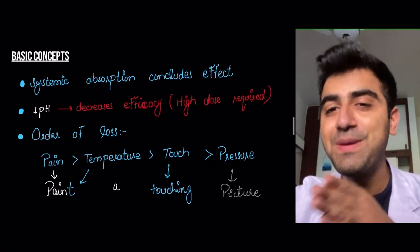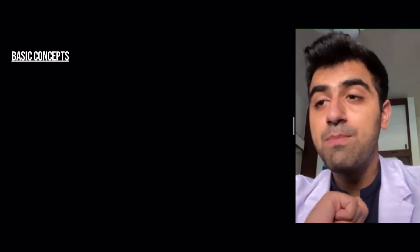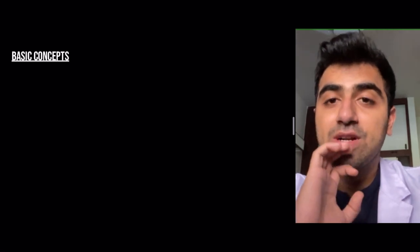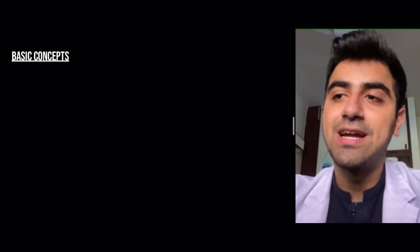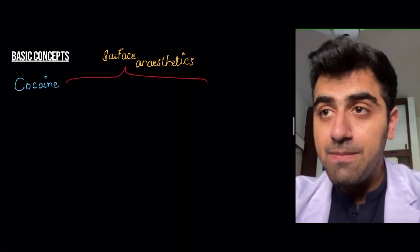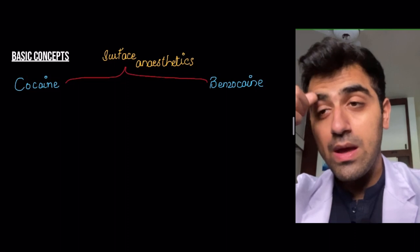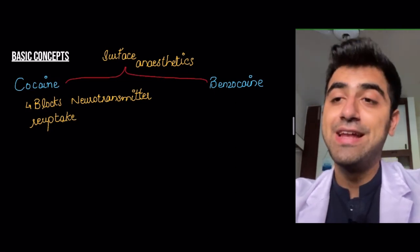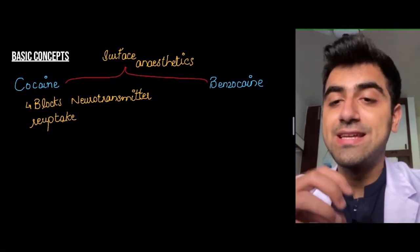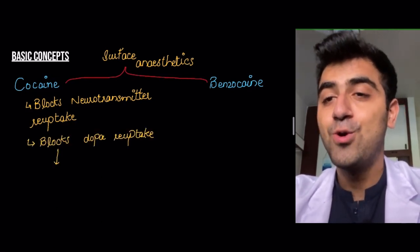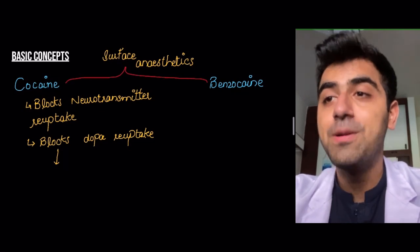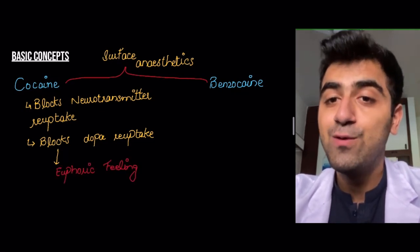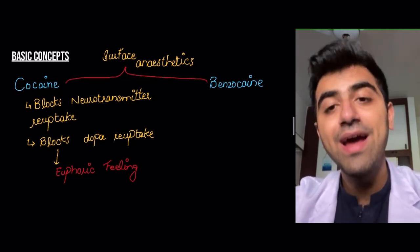Now let's talk about esters. I'll only cover the most high-yield points for each drug. Cocaine blocks neurotransmitter reuptake — it's a stimulant that increases synaptic levels of neurotransmitters. It blocks dopamine reuptake; dopamine is related to the reward pathway in the brain, giving that euphoric feeling associated with cocaine, which is exactly why it is abused.